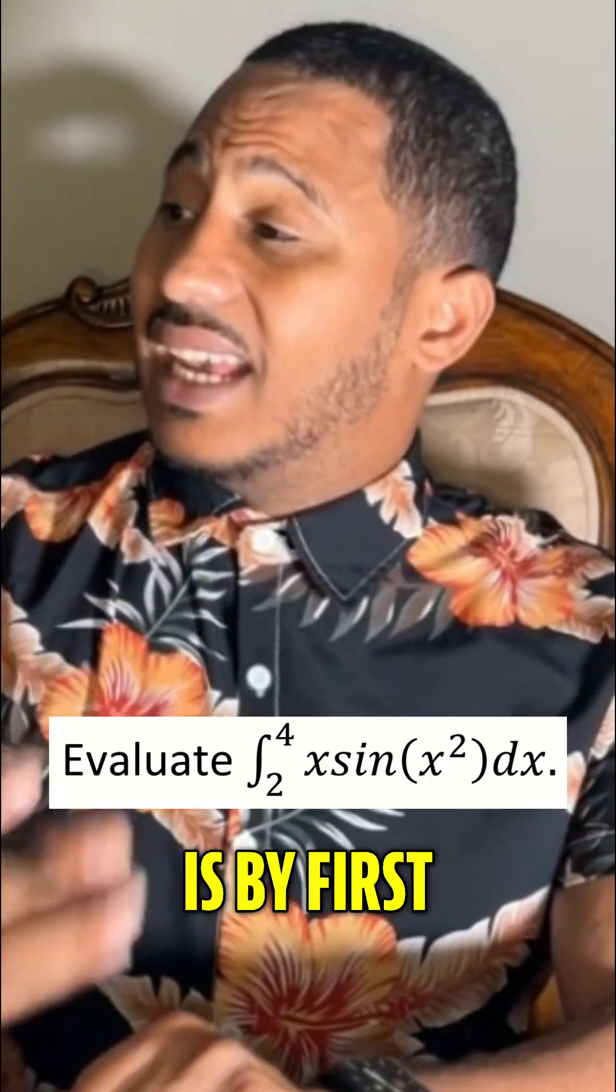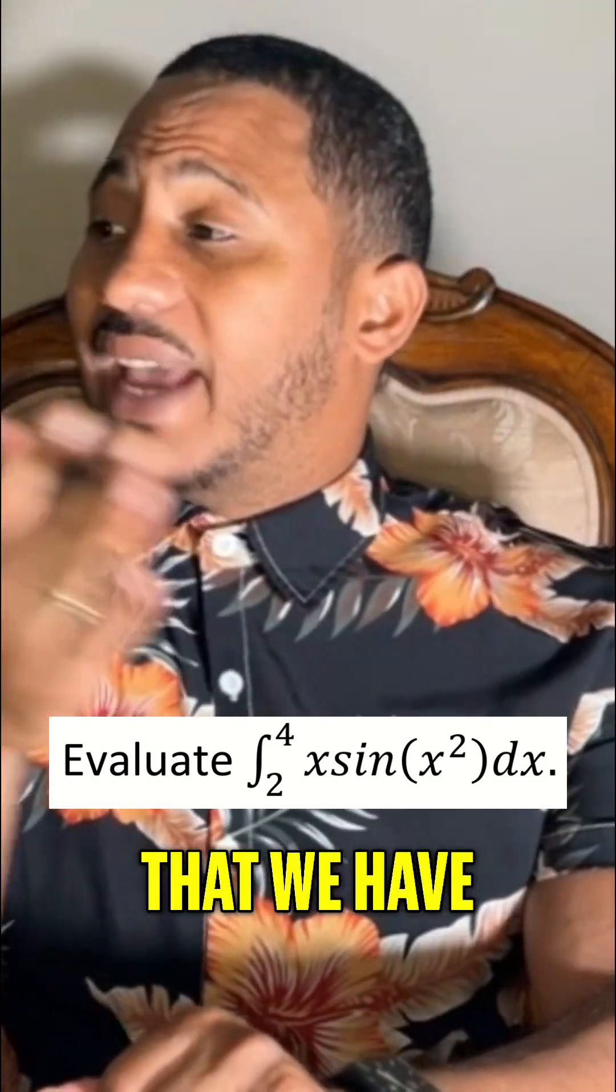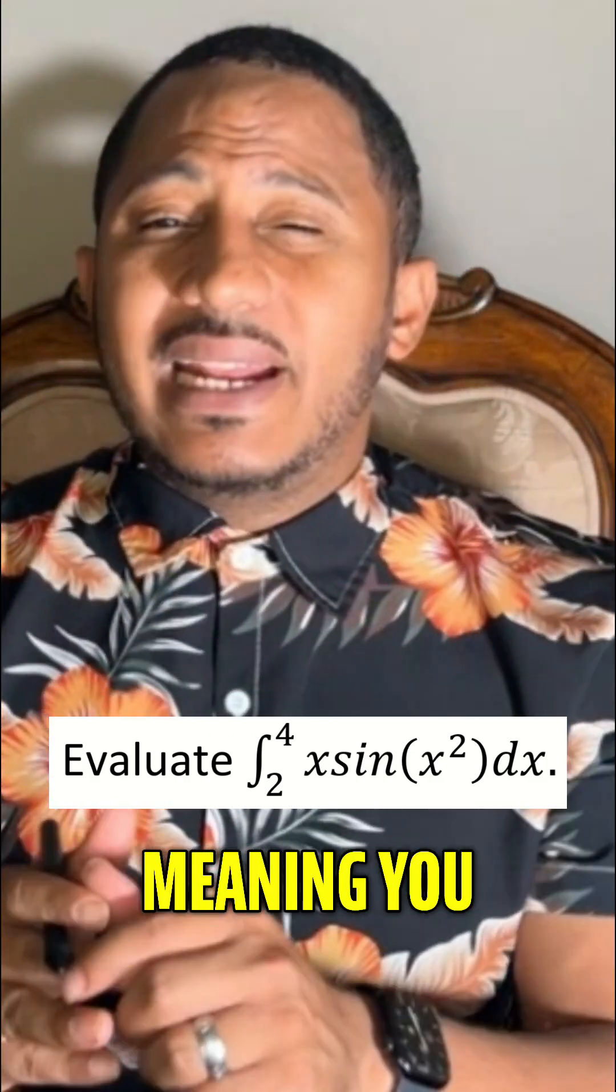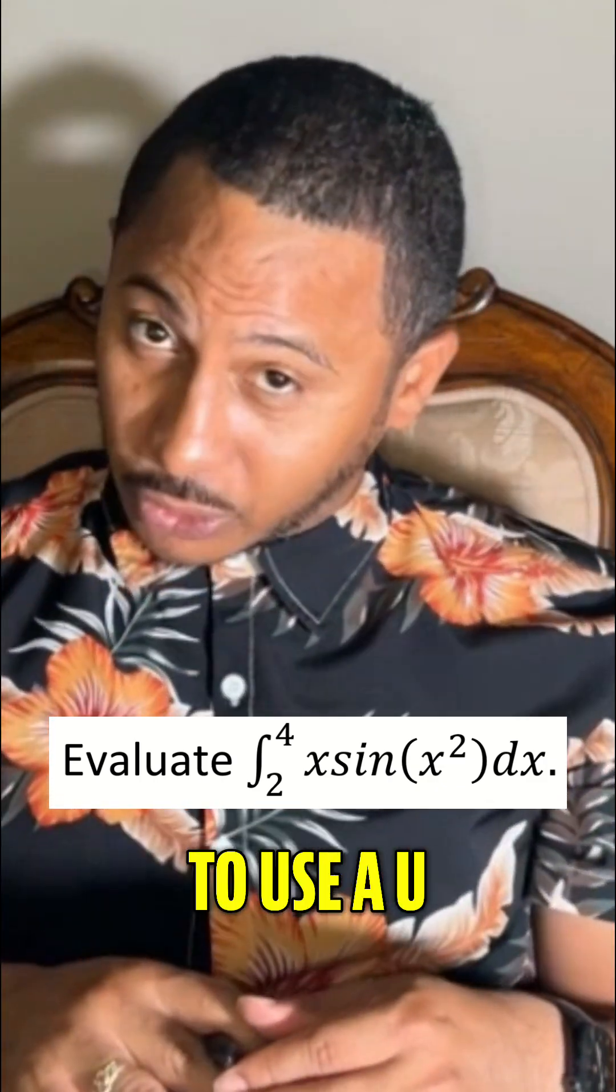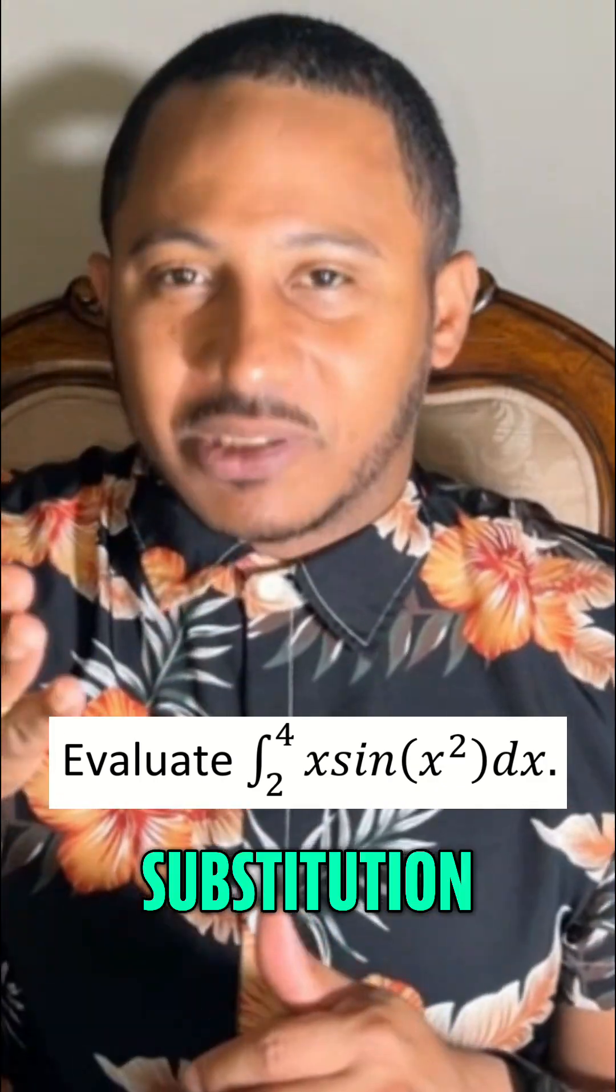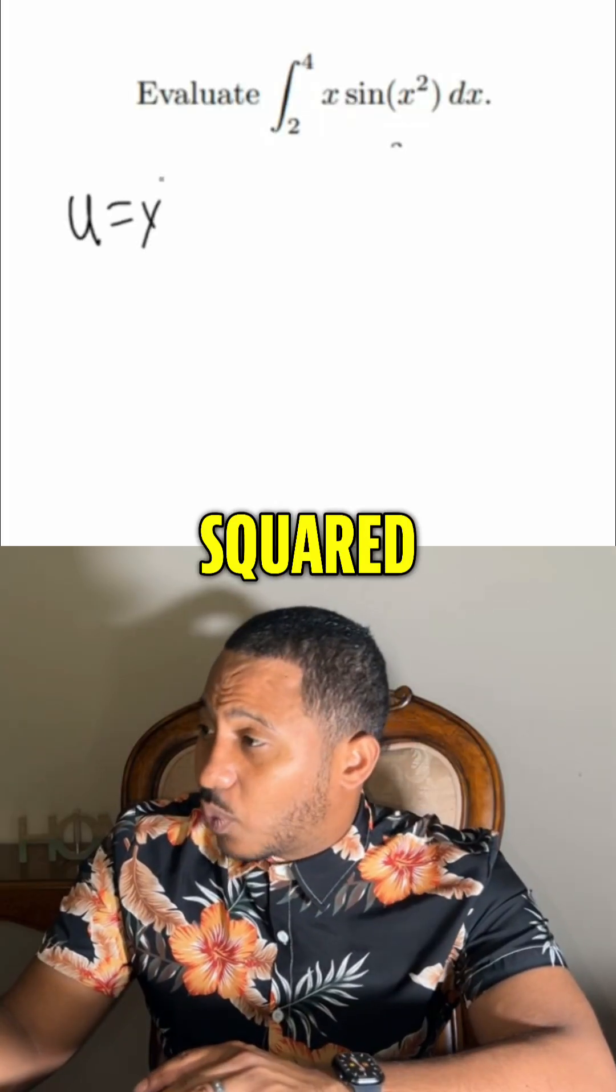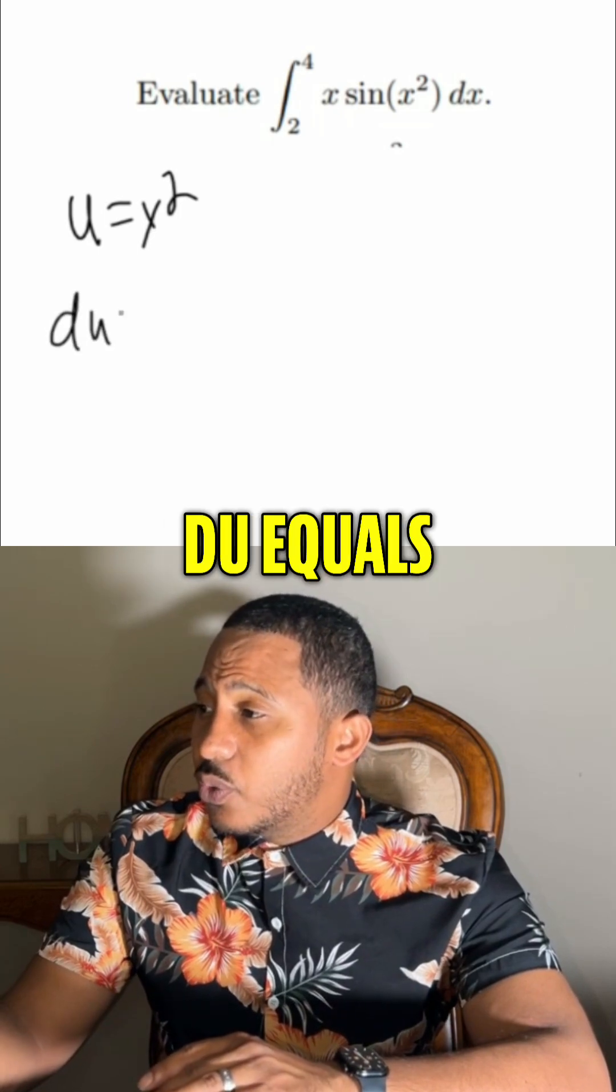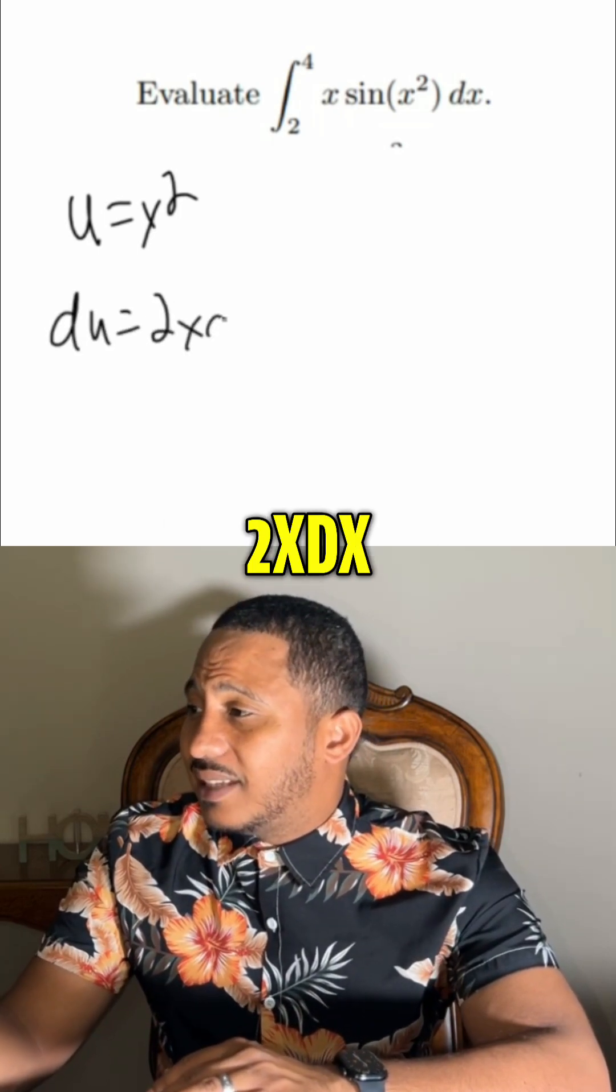So how do we evaluate this is by first noting that we have x times sine of x squared, meaning you might want to use a u substitution here. So if u equals x squared, then we know that du equals 2x dx.